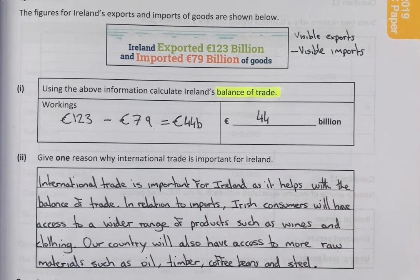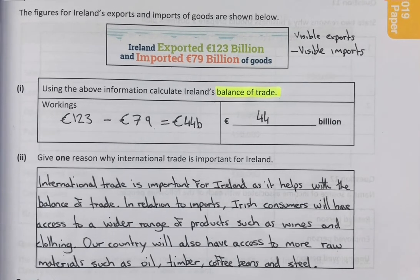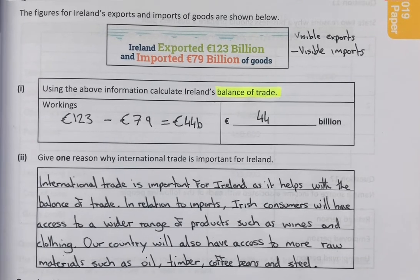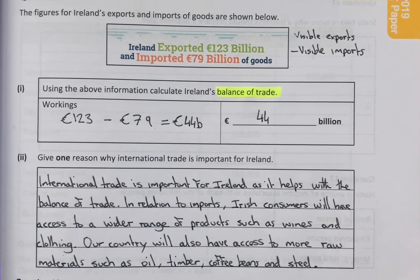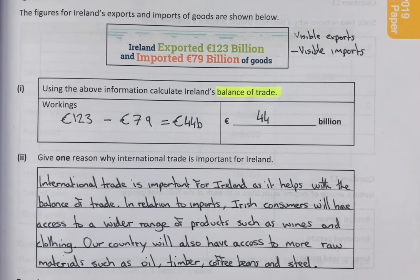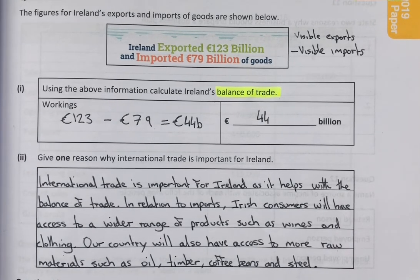Additionally, in relation to imports, because we import goods, international trade is important because the people of Ireland have access to bigger markets. This is also true when you are exporting — when you are exporting, you have a wider market to sell to, and likewise, when you are importing, you have a wider market to buy from. So we can get things like wine, which we cannot produce in our own country. We can also import things like oil, timber, coffee beans, and steel, which we need for secondary economic activities — things like making all different types of equipment. We need oil to heat our houses, for our cars, and to run machinery.